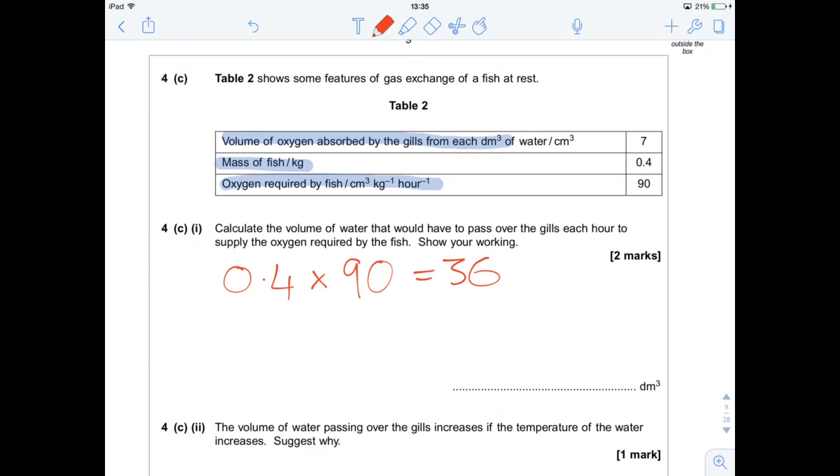So that is how much oxygen that particular fish will require. And now we need to essentially divide that by 7, which is how much oxygen the gills can get. So 36 divided by 7 should give us our answer. 36 divided by 7 equals 5.14.